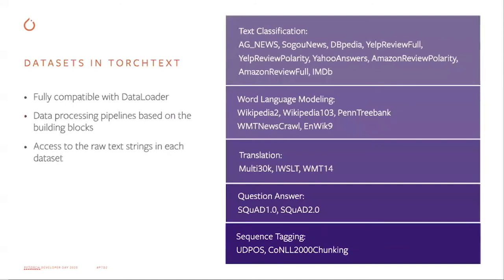So, the new datasets in TorchText. We have rewritten a few existing datasets in TorchText's nightly release. For the nightly release, we consider these new additions as a prototype, and we will release those new datasets with our better release versioning tool. The new datasets shown here are fully compatible with the DataLoader in PyTorch. Users will have the flexibility to build the data processing pipeline based on standard tokenizer and vocabulary blocks.